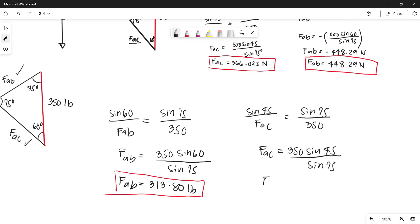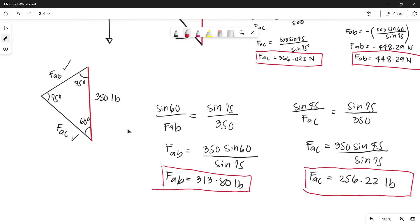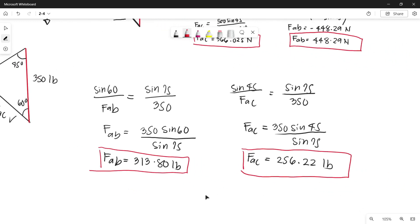So the magnitude of force AC is equals to 256.22 pounds. And that is how we can get the magnitude of the two forces using F equals 350 pounds. So this is now our answer.